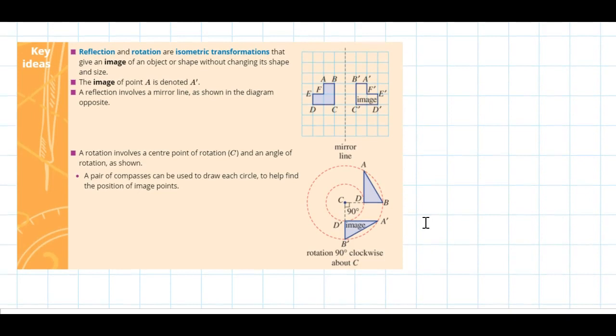Let's look at the key ideas here. As we've mentioned before, reflection and rotation are isometric transformations. They give an image of an object or shape without it changing its shape and size. It just moves it or transforms it across a point or a line.